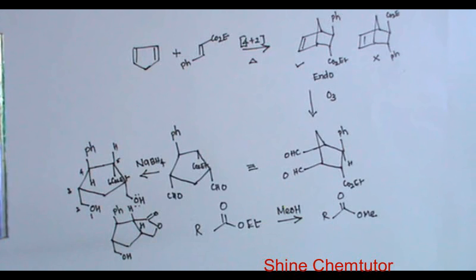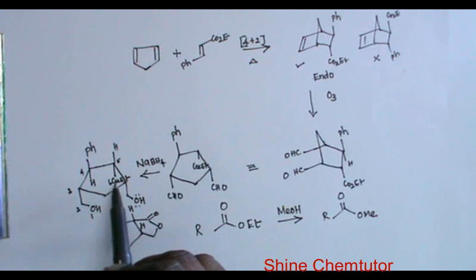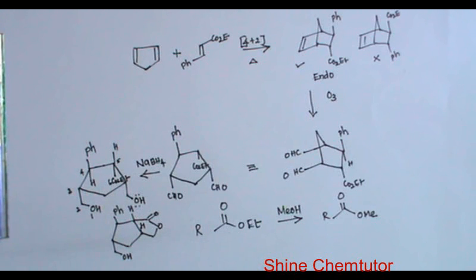Transesterification will be more facile when you go for acid condition. The acid will coordinate to CO2Et. Because of that, the δ+ on carbonyl carbon will be very high. Alcohol can easily attack carbonyl carbon to close the ring. So this is the product — whatever I get after the reaction sequence.